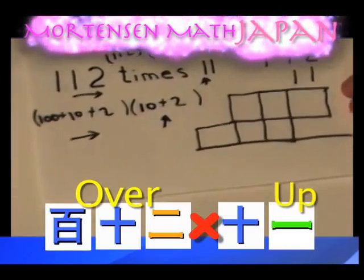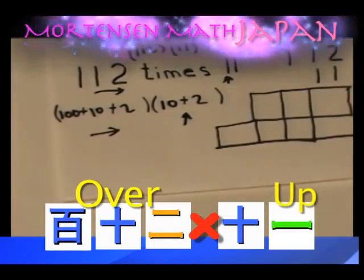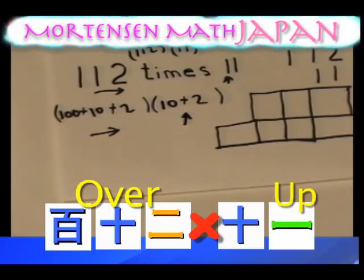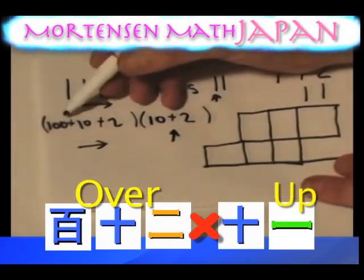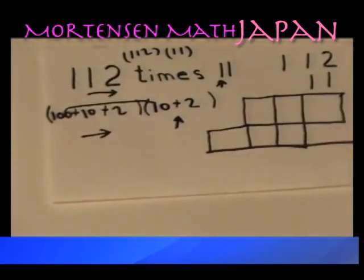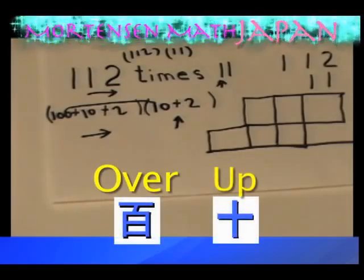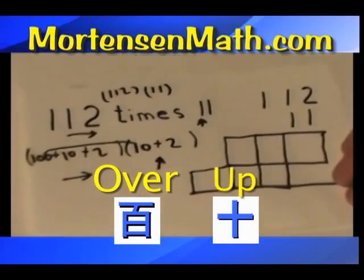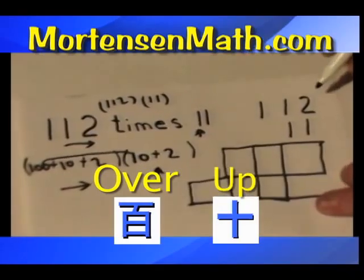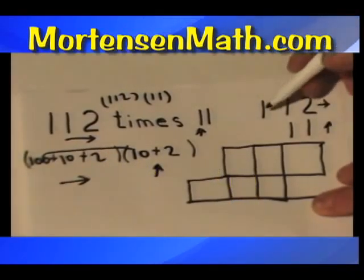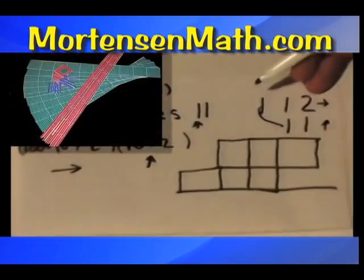Let's get the first piece. What would our first piece be if we went over a hundred and up ten? Let's connect that — over a hundred and up ten. You should even be able to visualize that in your mind; you're coming way over a hundred and up ten. Before we get the piece, let's make sure we do our notation. This is our over distance, this is our up distance, and our first piece is over a hundred and up ten.